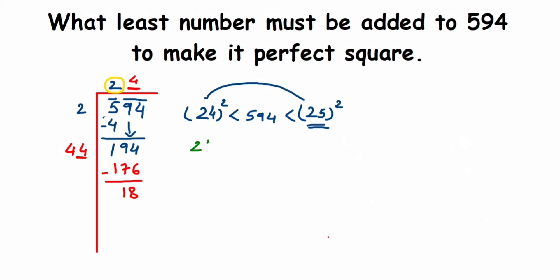24 squared - I'm not calculating this because we don't require it. This is less than 594. 25 squared is 625, meaning the perfect square after 594 will be 625. But how much should we add to 594 to get 625? Simply subtract them. So 625 minus 594, this will give us 31. So from here we can say that 594 plus 31 equals 625.